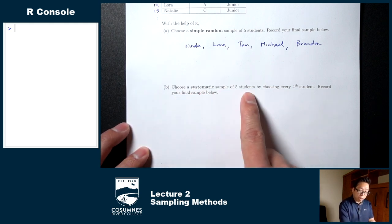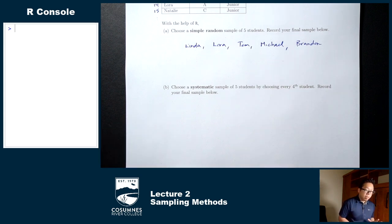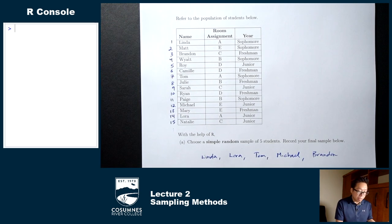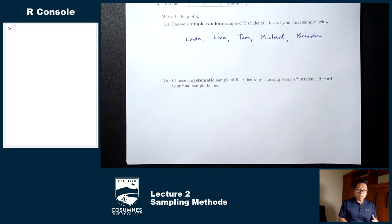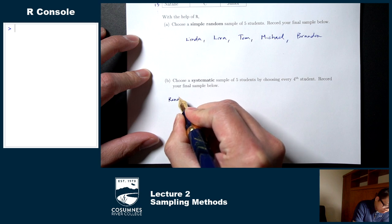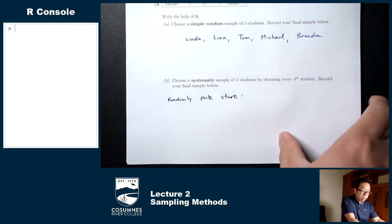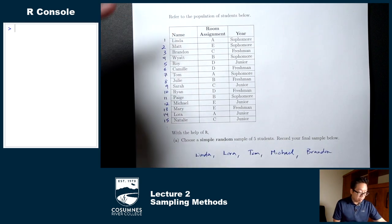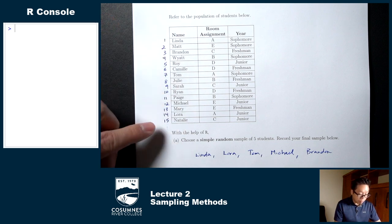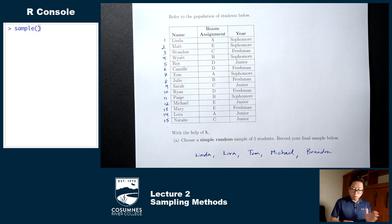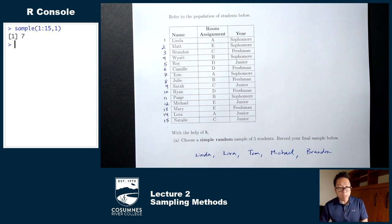Here it says choose a systematic sample of five students by choosing every fourth student. First, start with your list of everybody in the population and number everybody. We already did that for the simple random sample. The first thing we need to do is randomly pick a starting point. We want to use R for this. To pick one random number between 1 and 15, the command in R is: sample, parentheses, 1:15, comma, 1. I get 7, so I'm going to start with Tom as my first student.